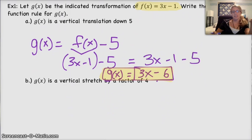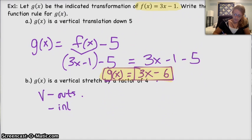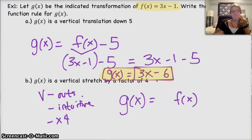Alright, problem b. G of x is a vertical stretch by a factor of 4. So, again, vertical means it's outside the function. And it also means it's intuitive. Since it's a stretch, we're going to be multiplying instead of adding or subtracting. So we're going to multiply by 4.